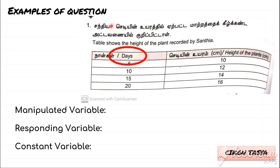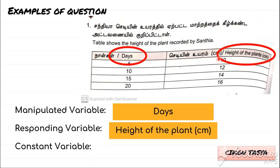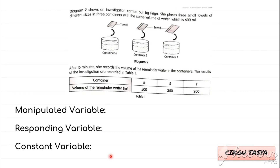So we can see here: the height of the plants will be the Constant Variable. You know the definition for Constant Variable — it is something that never changes. So this is how you identify variables from a table. Let's continue to the next one.